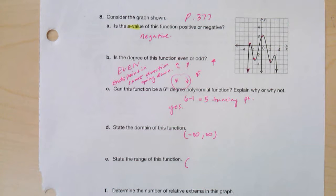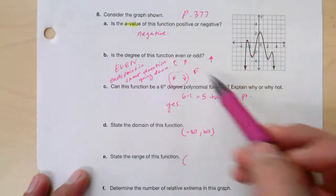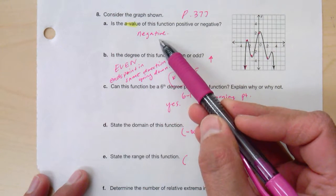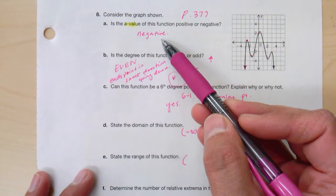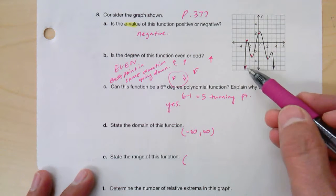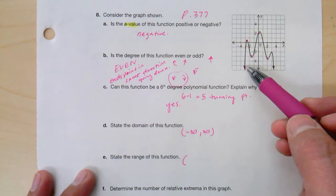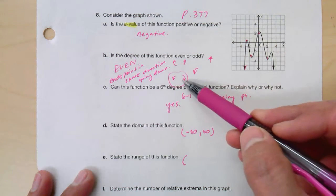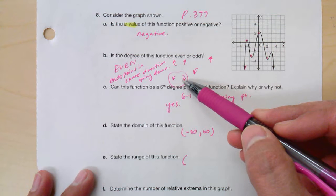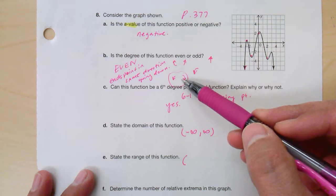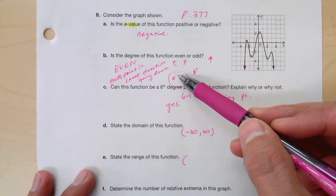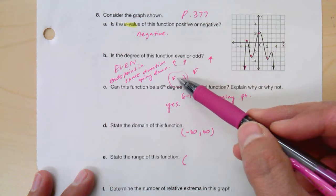Okay, so we also did page 377, and this one just gives you a new graph, and you have to be able to tell a couple of key characteristics. So the first thing is the A value, and I said the A value happens to be negative, and I know because usually the even degrees, they both open upwards or open downwards, but this one opens downwards, and the only reason it goes downwards is because the A is negative and reflects it over the x-axis.